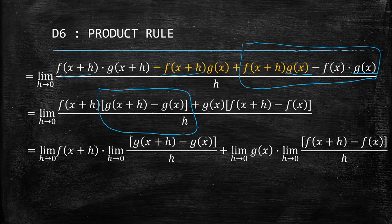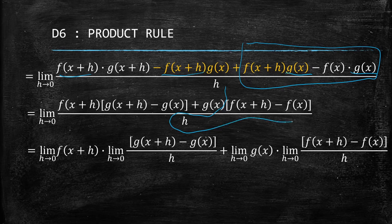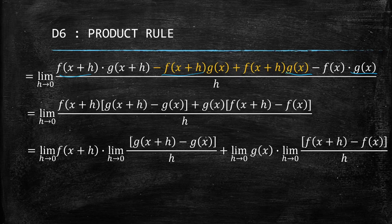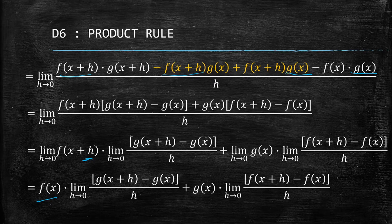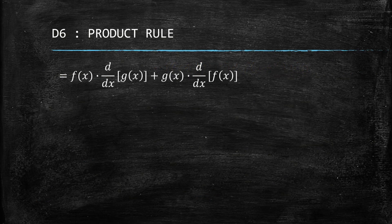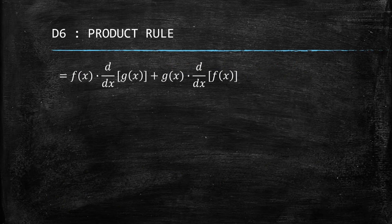We can take the limit of f(x+h), and we can also get the limit of [g(x+h) − g(x)] / h, which is the derivative of g. Similarly, there is the limit of g(x) and the limit of [f(x+h) − f(x)] / h. We are now near our goal. For the functions outside, substituting h = 0 gives f(x) for one term and g(x) for the other.